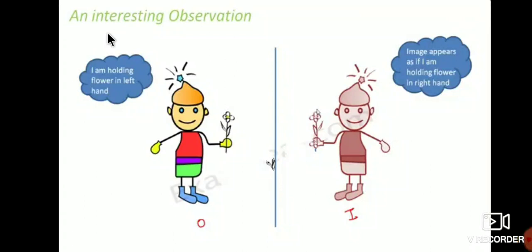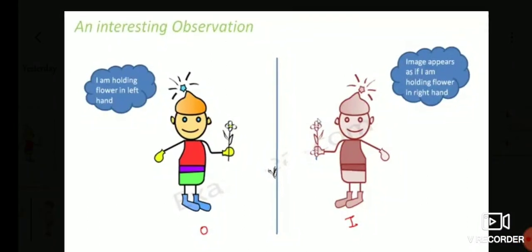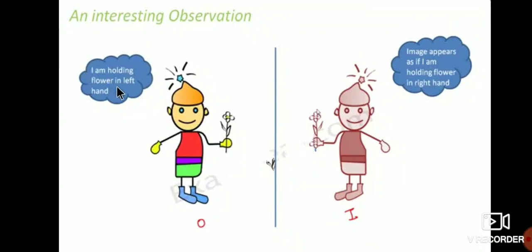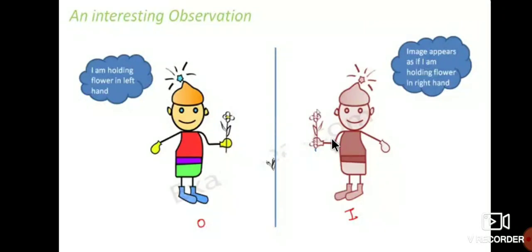There is one interesting observation about plane mirrors. See here — this doll is holding a flower in the left hand, but in the mirror image, it appears as if the flower is in the right hand. So in the mirror image, left and right are reversed. This reversal is called lateral inversion — the image is erect but left and right are swapped.